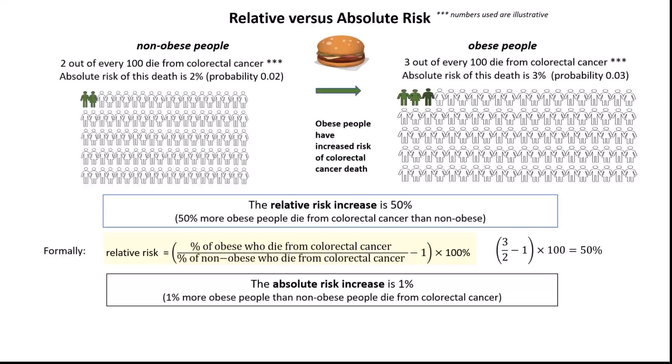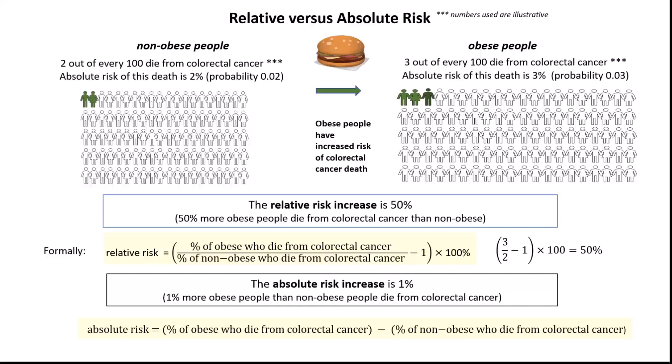The absolute risk increase, however, is only 1%, because 1% more obese people than non-obese people die from colorectal cancer. Formally, absolute risk increase is simply the percentage of obese people who die from colorectal cancer minus the percentage of non-obese people who die from colorectal cancer.